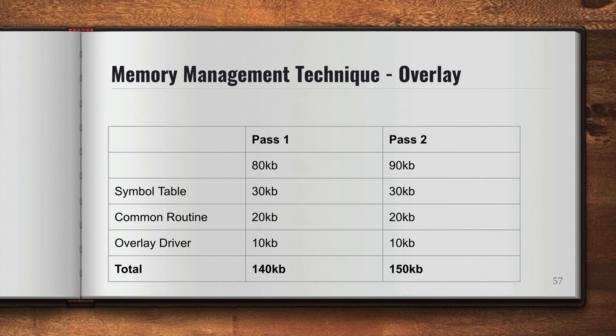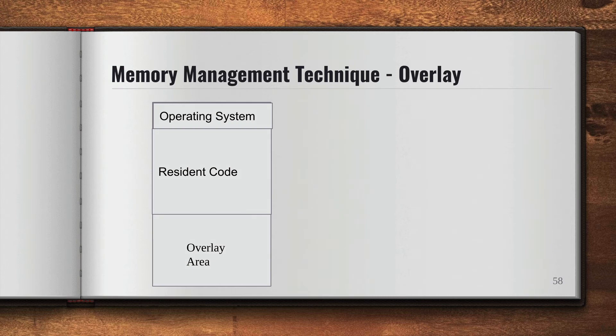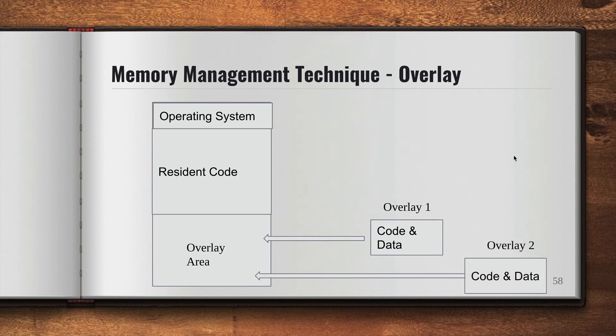We have operating system, we have the resident code, and then we have the overlay area. Overlay one can come into the overlay area with code and data when it needs to be executed. Once it's done, it moves out, and then overlay two comes into the overlay area as and when needed - one at a time.